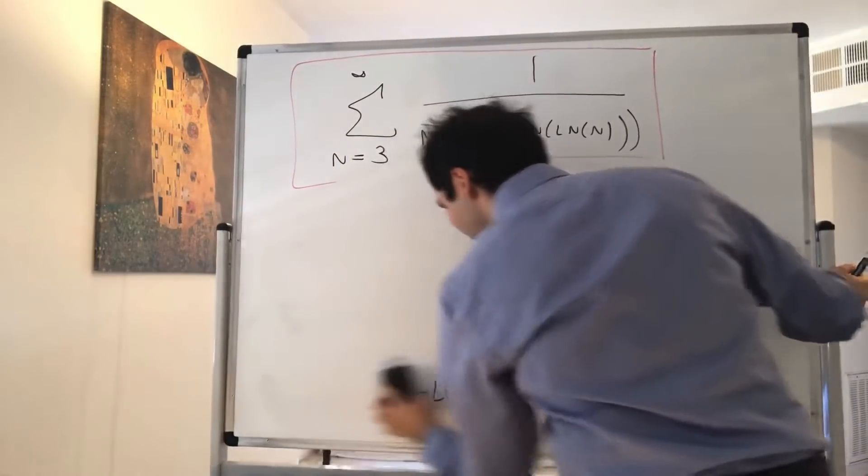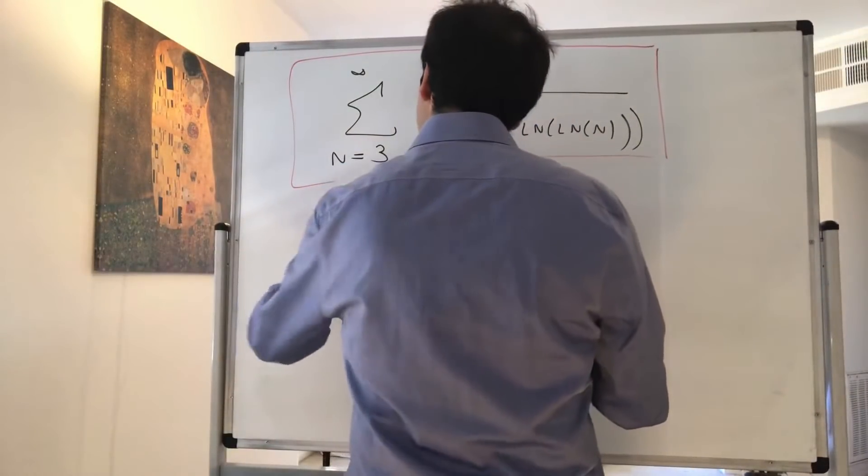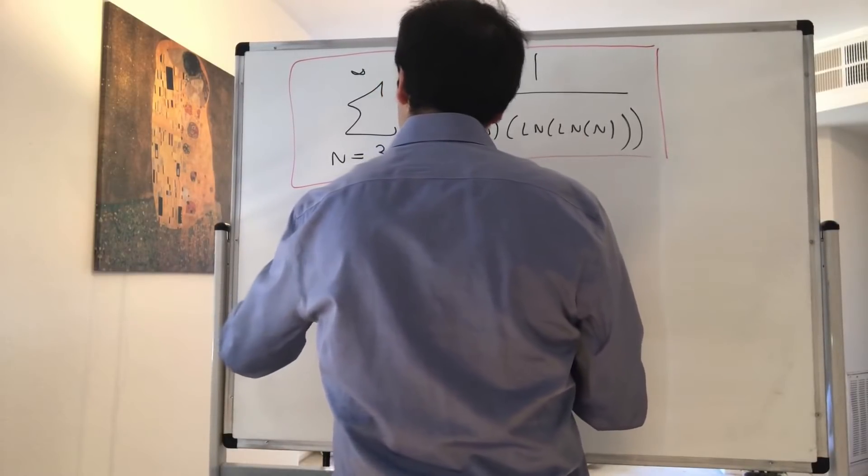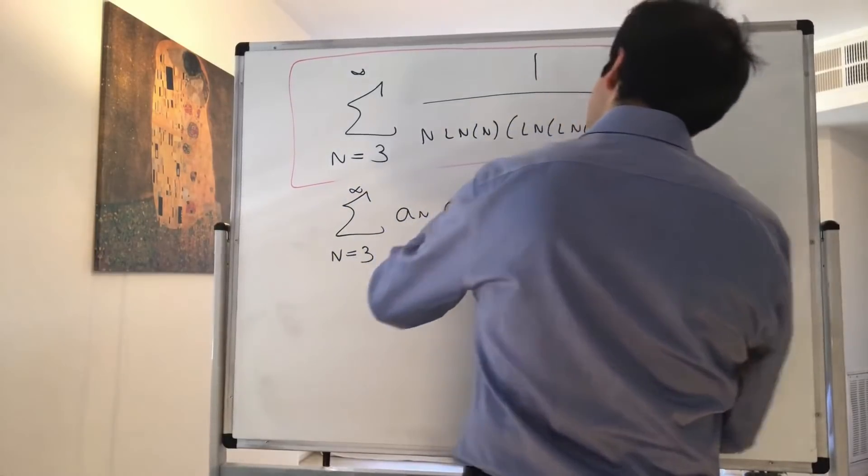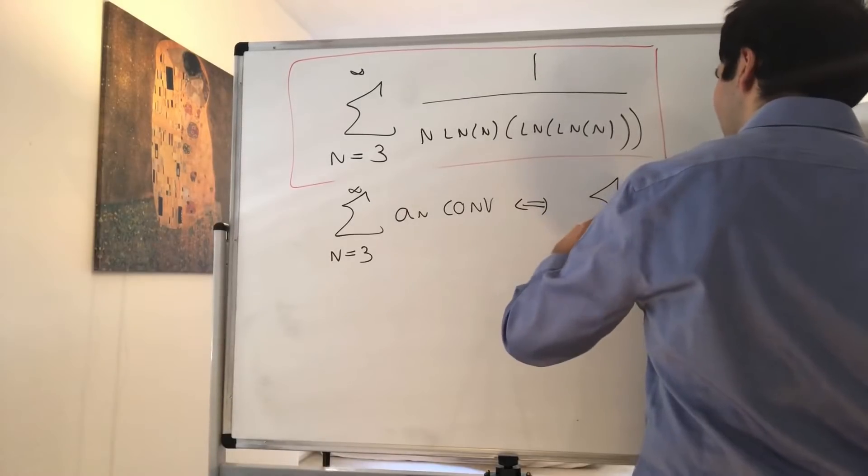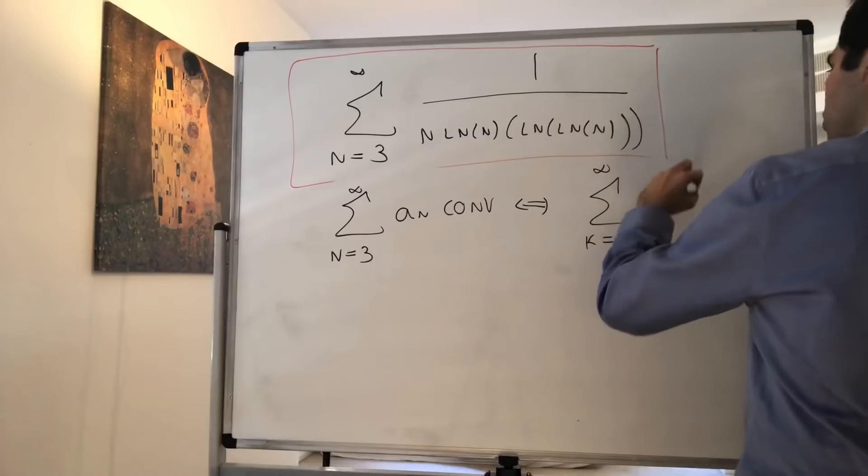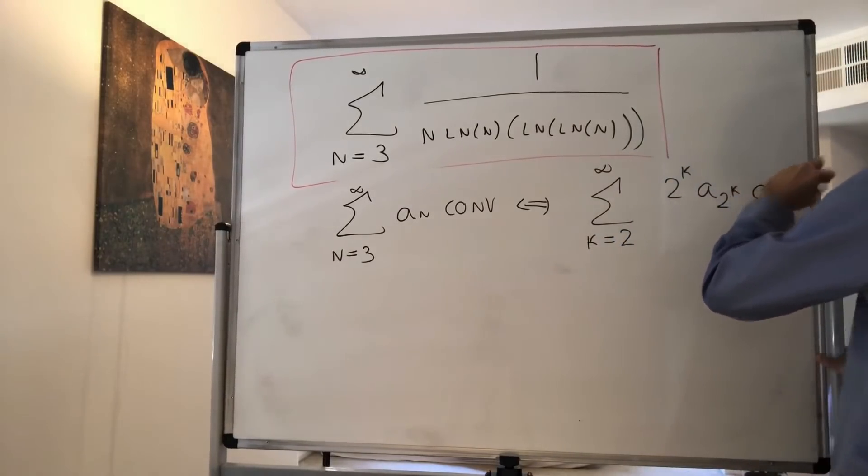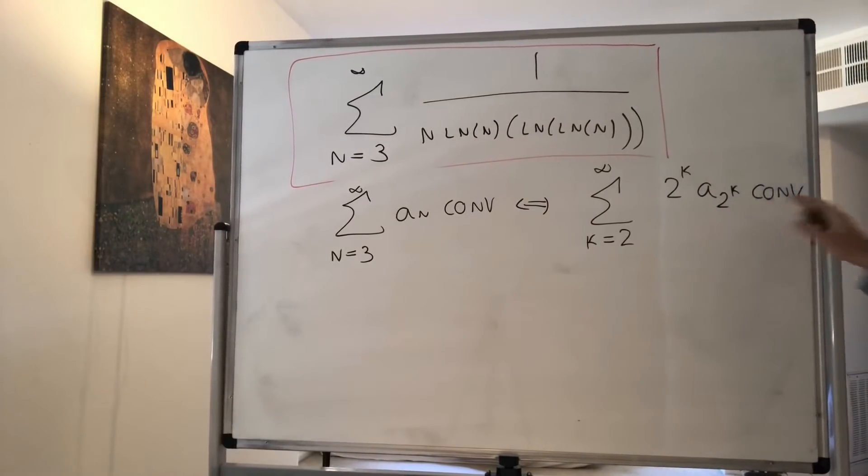And I want to remind you, what does the block test say? The block test just says that this series from n equals, let's say, 3 to infinity of a_n converges, if and only if the series of the following blocks, sum k from 2 to infinity of 2^k times a_{2^k} converges. So it just groups things into blocks of length 2^k.